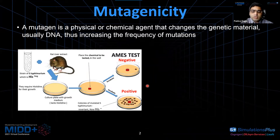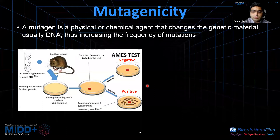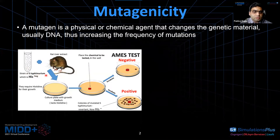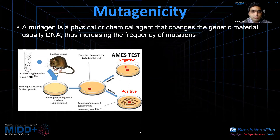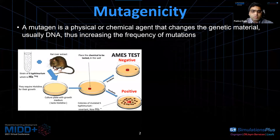The Ames test has been widely used — it is the most frequently used mutagenicity test, which was introduced by Bruce Ames in Berkeley in the 70s. According to this test, the chemical is tested for its mutagenicity against a strain of Salmonella typhimurium. If the Ames test is negative, the compound is called non-mutagenic; if the Ames test is found positive, the compound is called mutagenic.